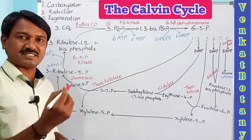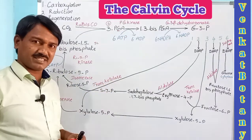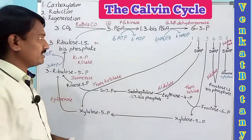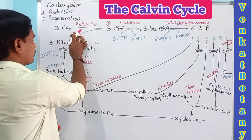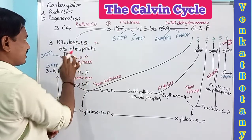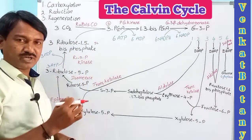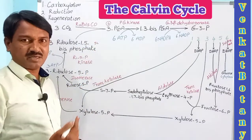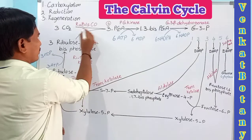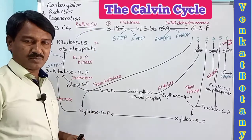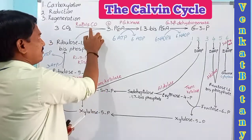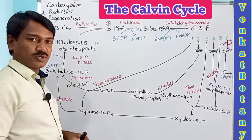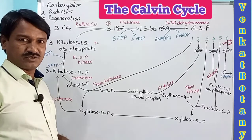Because the first stable compound, 3-phosphoglyceric acid, contains three carbons, this is called the C3 cycle. Three CO2 molecules combine with three molecules of RuBP, and this reaction is catalyzed by the enzyme Rubisco - ribulose 1,5-bisphosphate carboxylase/oxygenase - which is one of the most abundant proteins in the entire world.